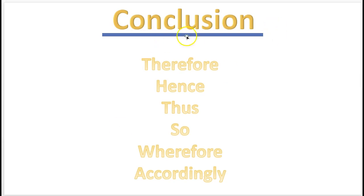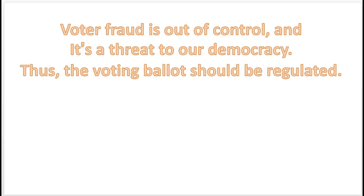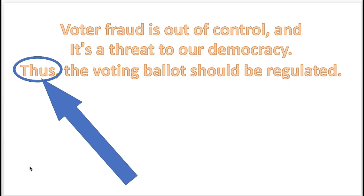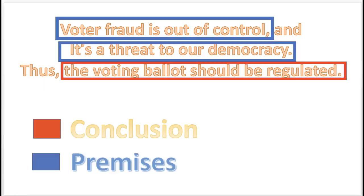Now let us practice the conclusion indicator words. Memorize these — anytime you see them, you should know that a conclusion is nearby. Here's a practice problem: 'Voter fraud is out of control, and it's a threat to our democracy. Thus, the voting ballot should be regulated.' The conclusion indicator word is 'thus.' The conclusion is in the red box, and the premise is in the blue box.